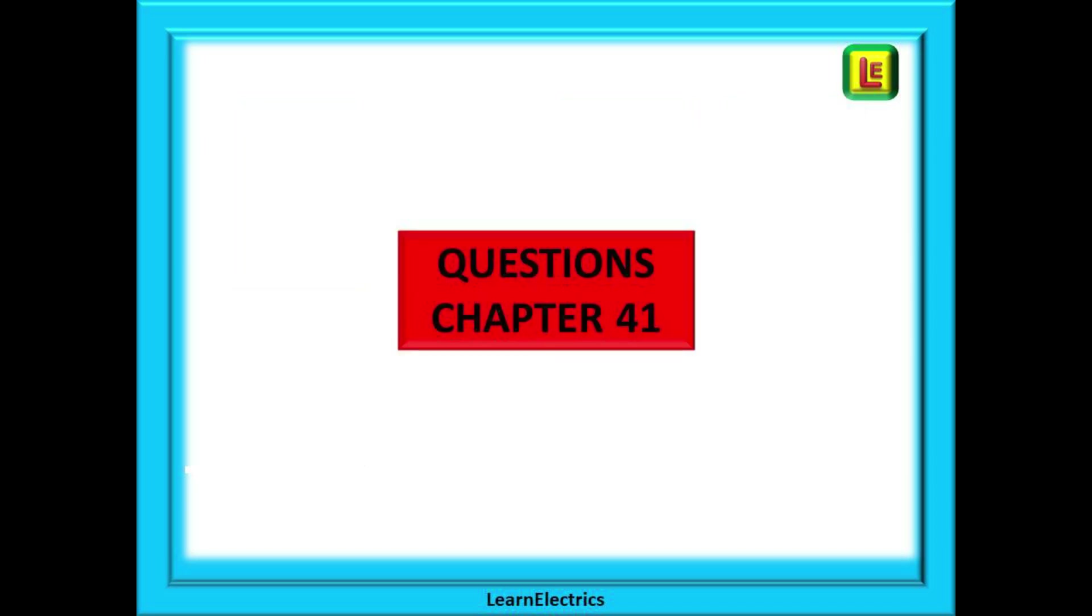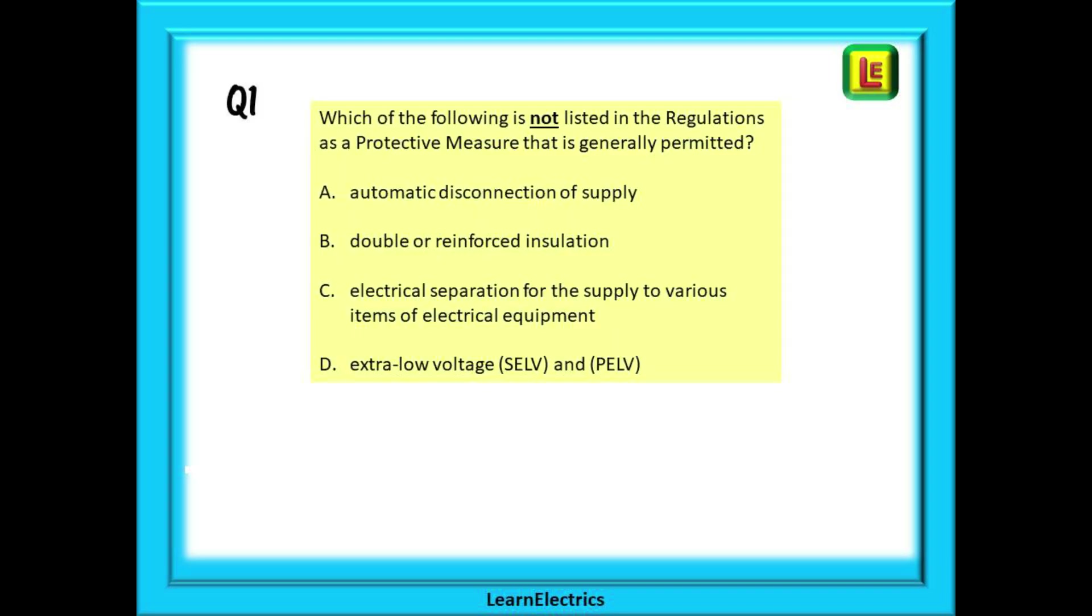And now on to questions for this session: Chapter 41. Which of the following is not listed in the regulations as a protective measure that is generally permitted? There will be a list for this. The question uses the word 'generally.' And there is an entry in the contents on page 55 that says general requirements. Will this tell you which regulation to go to? And also remember that this is a NOT question.